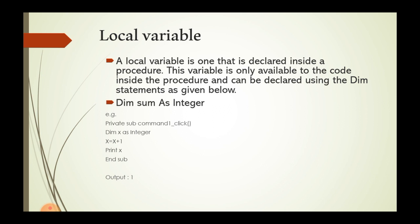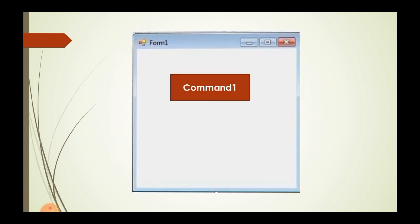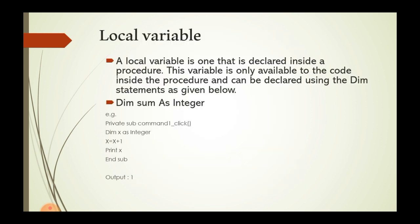For example, place a command button on the form and double-click it to go to the code window. Write the code: Private Sub Command1_Click() — Dim x As Integer, x = x + 1, Print x, End Sub. The output will be 1 each time it is clicked.